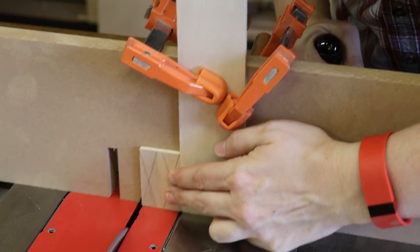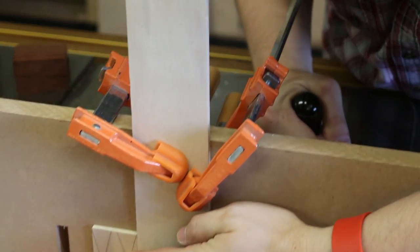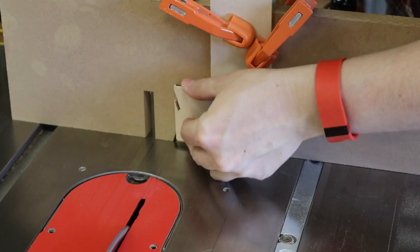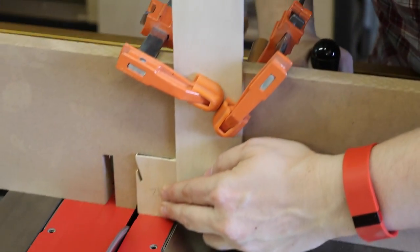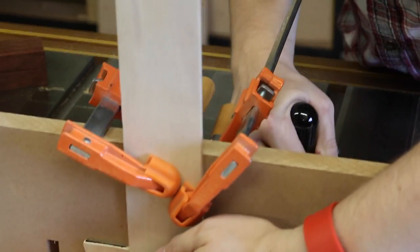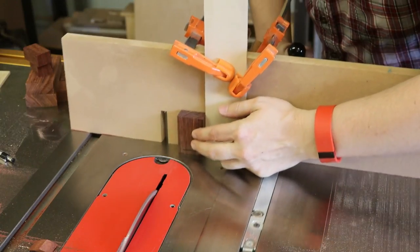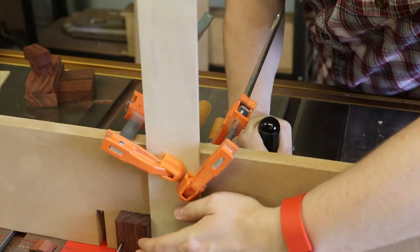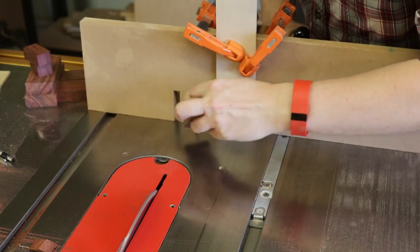And during my test cuts, what I did was I just kept raising the blade very slowly until I got the two corners to just barely miss from meeting. Once I had that, then I proceeded to take my pieces and cut one side of every single piece.